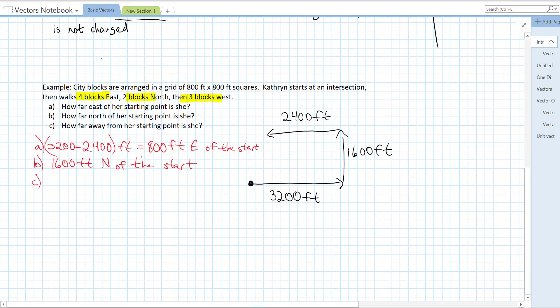And then how far away from the starting point is she? Well, if she started out here, and she ends up right here, her overall resultant displacement vector is this blue arrow here. So we just need to find the length of this arrow here. We can actually use the Pythagorean theorem. So I'm going to sketch out a diagram. We know that her overall distance east is 800 feet.